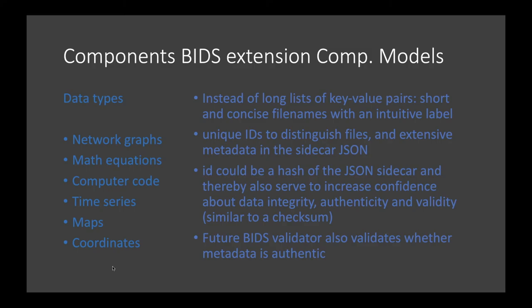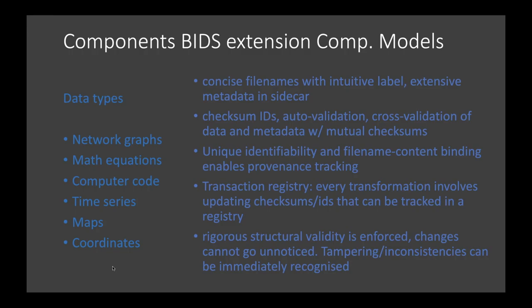A future BIDS validator could work as a registry where file manipulation takes the shape of a transactional process. You don't simply manipulate a file — you manipulate it and then make a transaction of that manipulation. Every change will be recorded and every change requires a validation step. Combined with difference tracking like in GitHub, we end up with unique identifiability, checksums, and a transactional registry where every transformation involves updating checksums and IDs tracked in the registry.